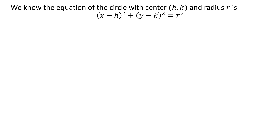We know the equation of a circle with center (h, k) and radius r is: (x - h)² + (y - k)² = r².